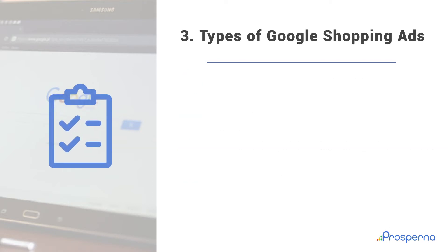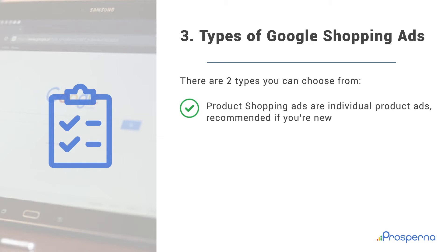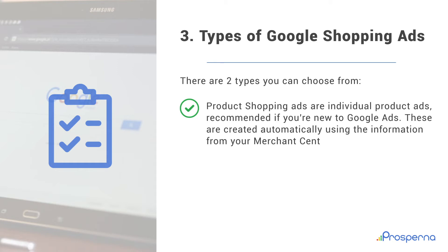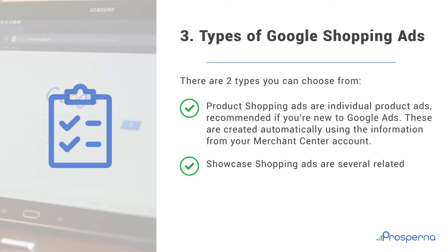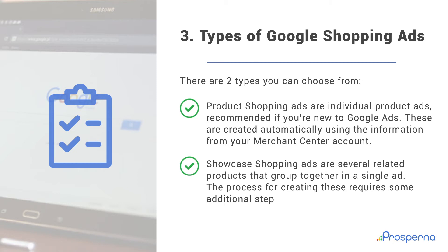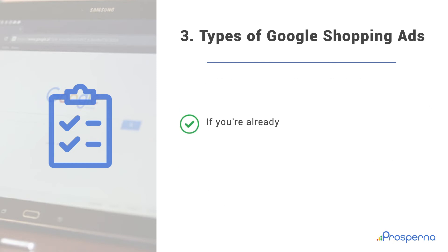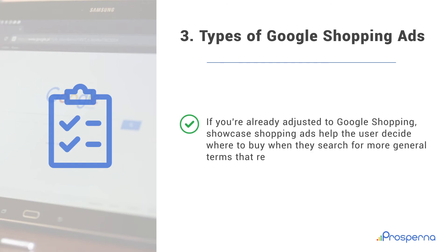Number 3: Types of Google Shopping Ads. There are two types you can choose from. Product Shopping Ads are individual product ads, recommended if you're new to Google Ads. These are created automatically using the information from your Merchant Center account. Showcase Shopping Ads are several related products grouped together in a single ad. If you're already adjusted to Google Shopping, Showcase Shopping Ads help the user decide where to buy when they search for more general terms that relate to your products.